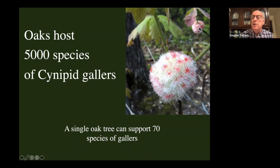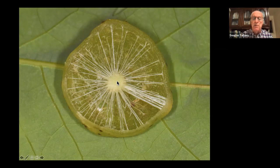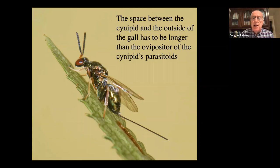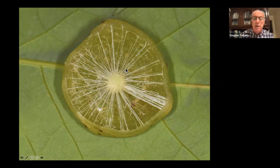Many galls are hollow. If you cut open this apple oak gall, the actual larvae is in the center in a very hard sphere — all the surrounding space is open. It turns out cynipid gallers have more natural enemies than any other type of insect, in the form of parasitoid wasps like this torymid wasp with a very long ovipositor. The distance between the larva and the outside of the gall must be bigger than the ovipositor of its natural enemies. So the gall grows very quickly to create a safe spot for the galler's larvae.